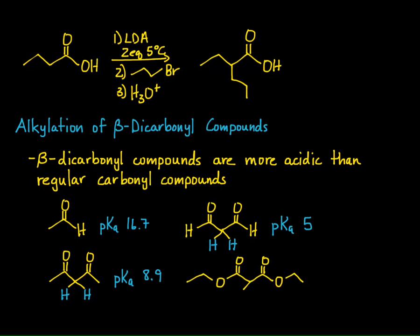We can also look at beta-diesters, again talking about the hydrogens in the middle. With esters, we see the trend of acidity decreasing as you add R groups: aldehydes are more acidic than ketones, and ketones are more acidic than esters. The pKa of these alpha-hydrogens of beta-diesters is still substantially more acidic than regular esters, which typically have pKa around 24. Ketones have pKa values in the high teens — 19 to 20 — and we see that with beta-diketones it's much lower.